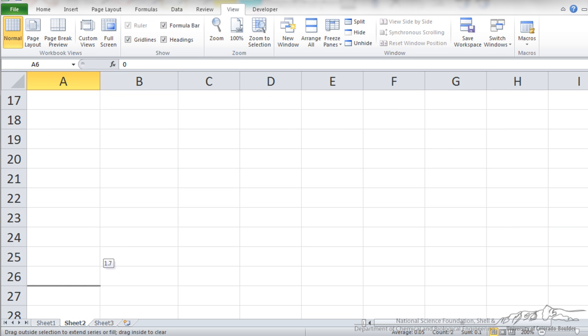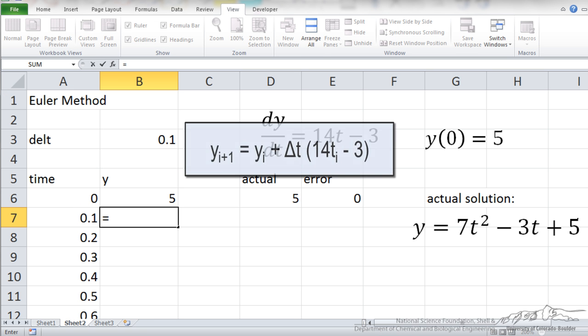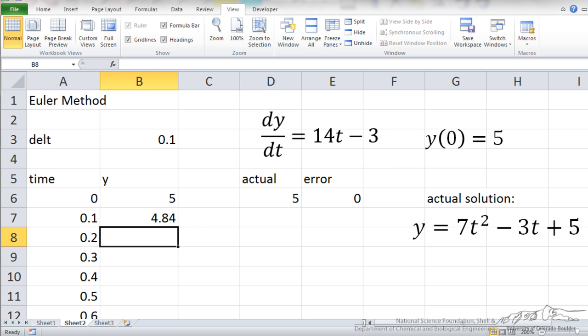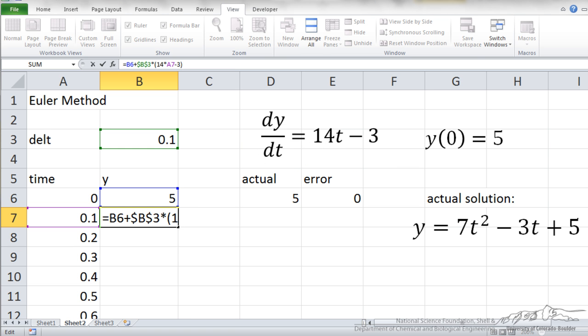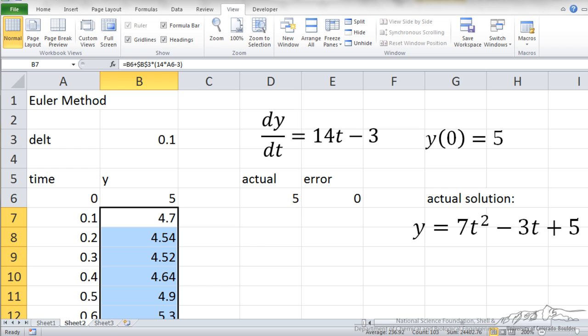I am just going to autofill the time step down to about 10 seconds or so, and now using the equation we just derived, I end up with this equation where I have got the Δt set up here. The time has to be the previous times, and copy that down. So now if I wanted to, I could plot this.